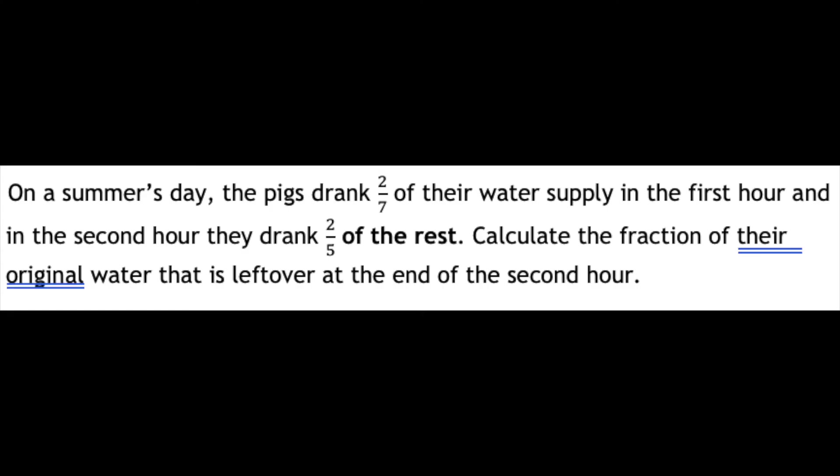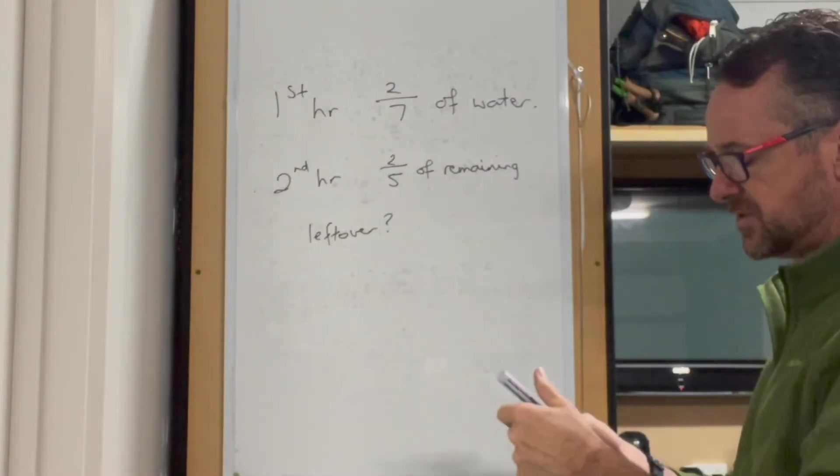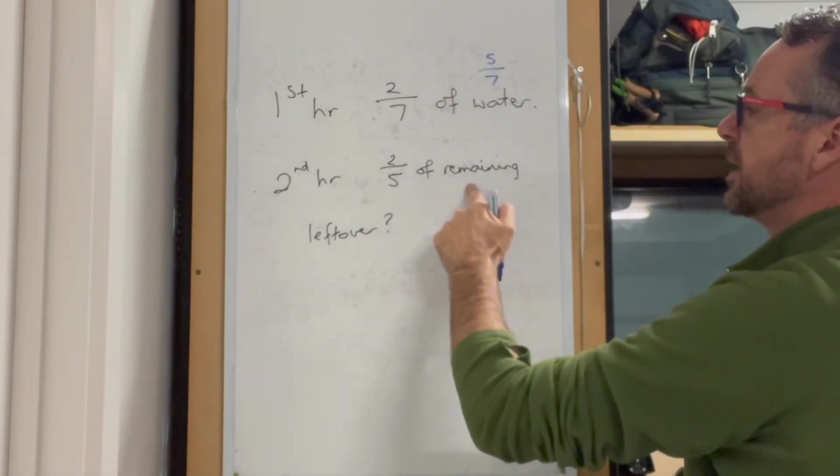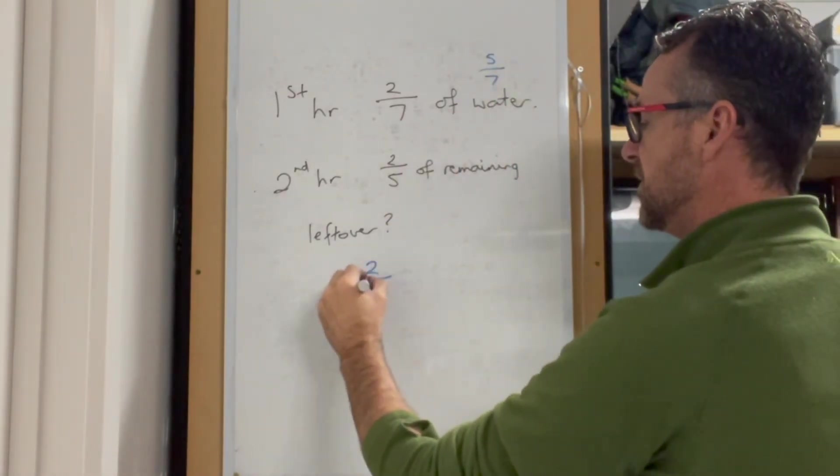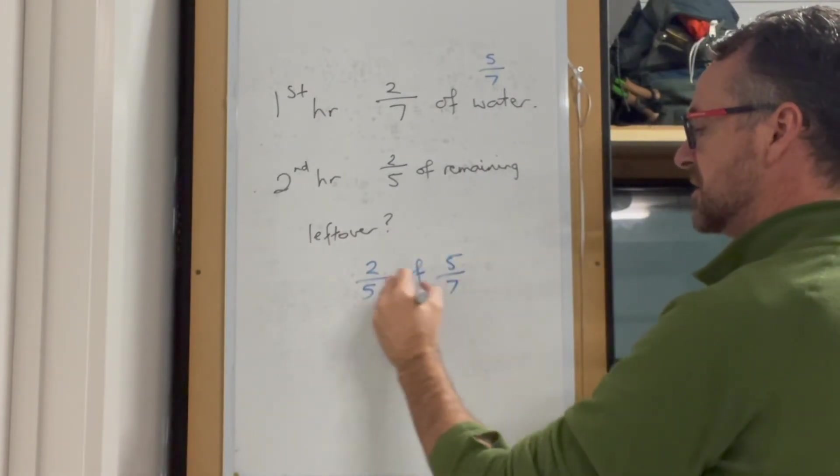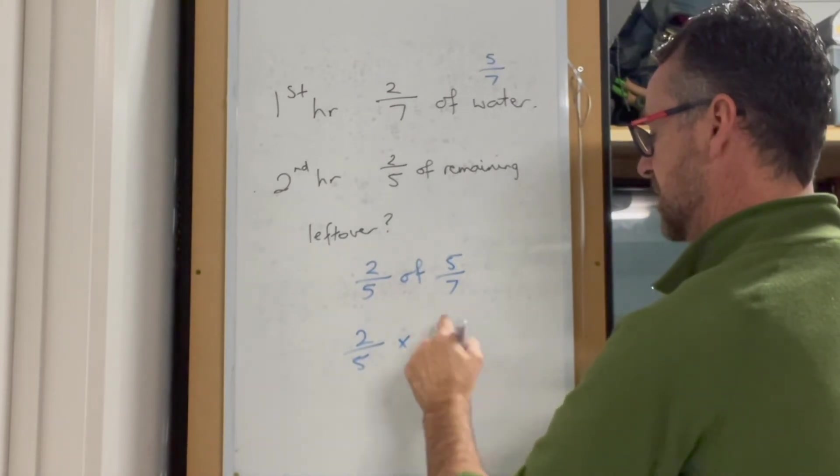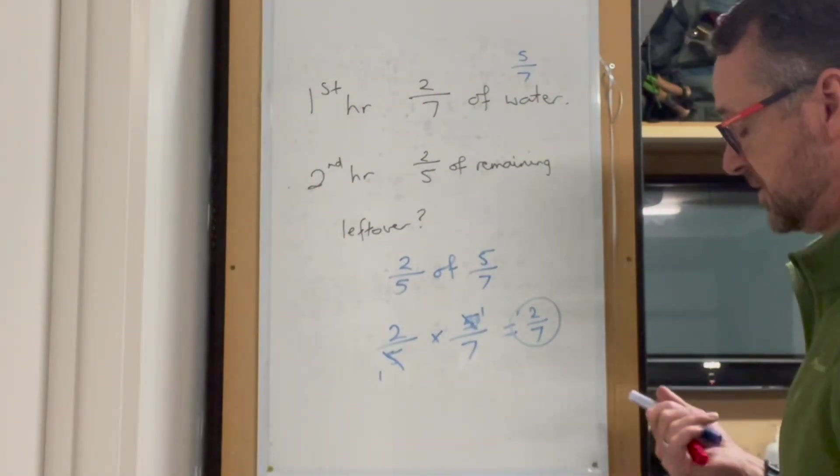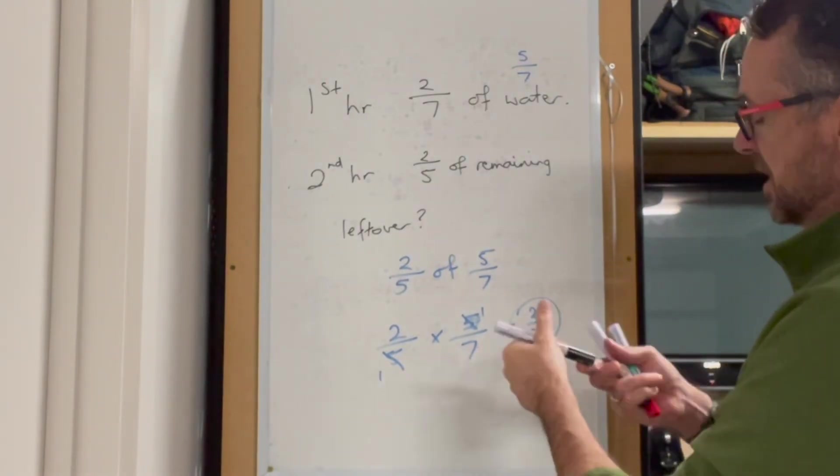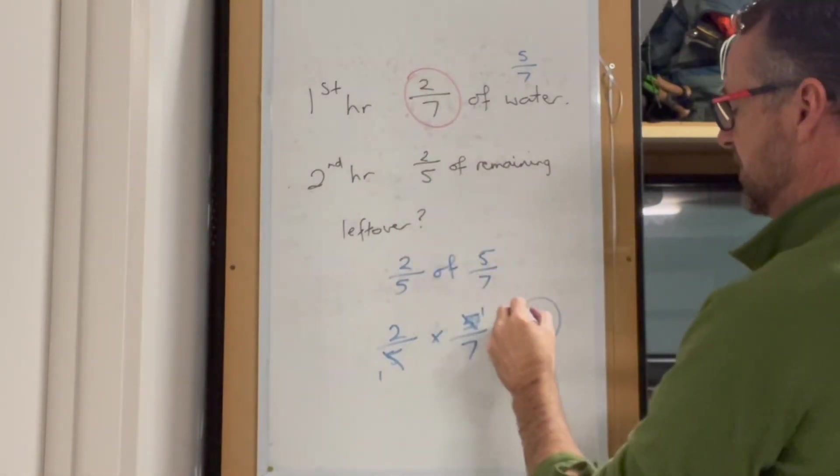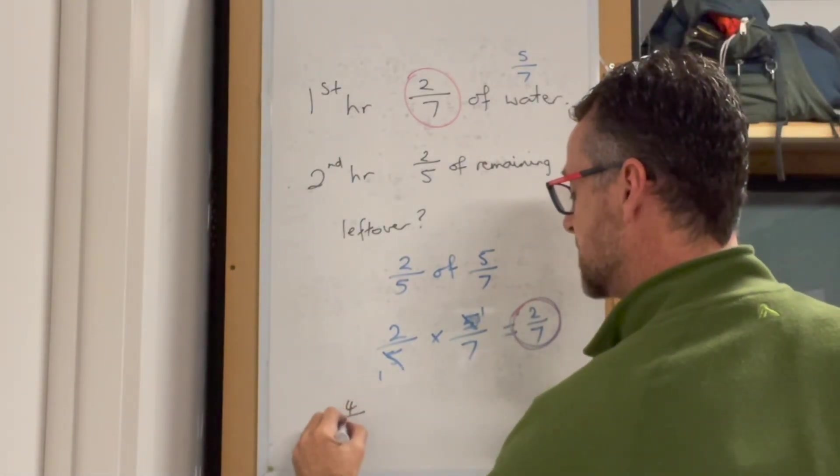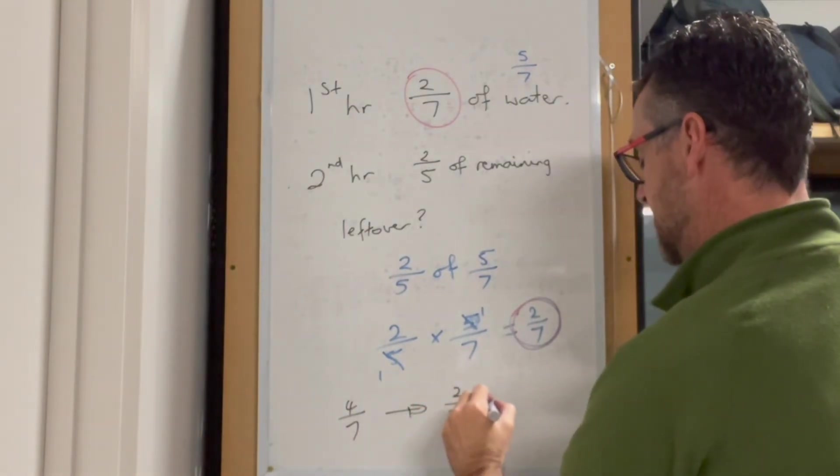Pigs are drinking water from a tank. After the first hour they drank 2 sevenths, so 5 sevenths is left. In the second hour they drank 2 fifths of the remaining. So 2 fifths of 5 sevenths: 2 fifths times 5 sevenths equals 2 sevenths. They drank 2 sevenths in the first hour and 2 sevenths in the second hour, so in total 4 sevenths. Therefore, 3 sevenths remains in the tank.